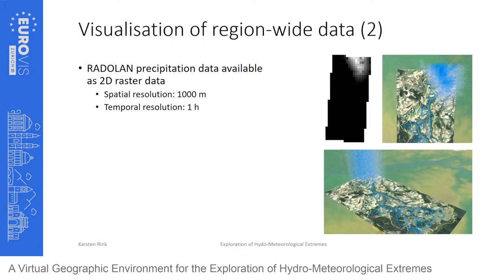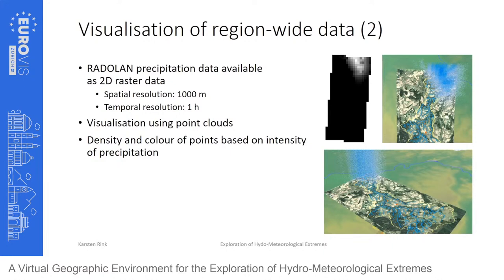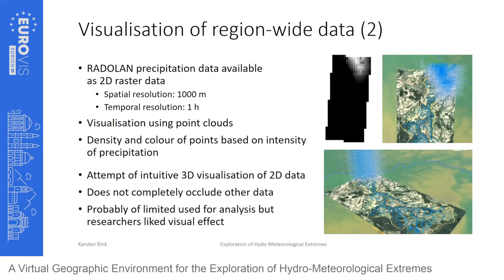Our approach for displaying precipitation data from the German Weather Service is different. The original 2D raster data at one-hour intervals and 1000-meter resolution was transformed into point clouds, where the density and color of points represent the amount of precipitation. This choice was controversial among reviewers, but we wanted an intuitive 3D visualization of coarse 2D data that does not completely occlude other datasets. Researchers of the MOSES initiative liked the visual effect and we believe it is useful for outreach.